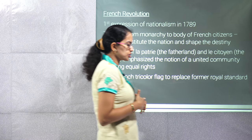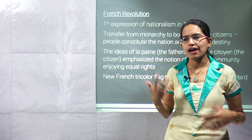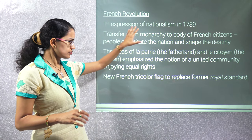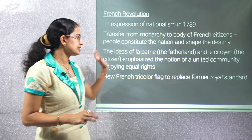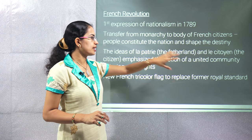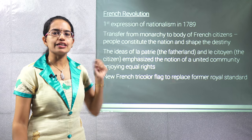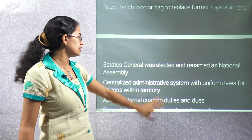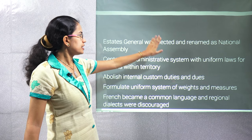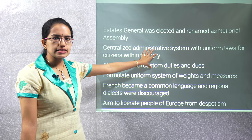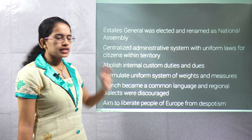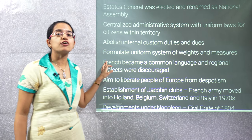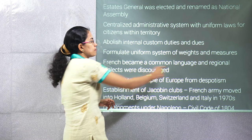When it comes to the French Revolution — which we have already studied in detail in class 9 — some key findings are: the concept of fatherland and the citizen, which emphasised commonness, unity and equality of rights. We talked about the new tricolour flag in France, how the Estates General were elected, a centralised administration system, abolition of internal customs duties, a uniform system of weights and measures, and a common currency. Those developments are very important.